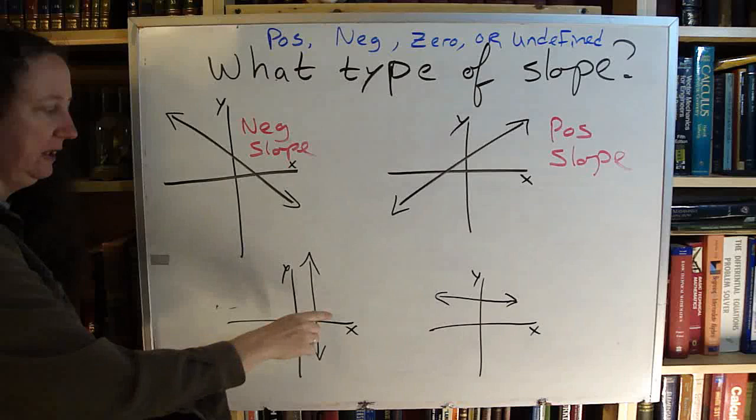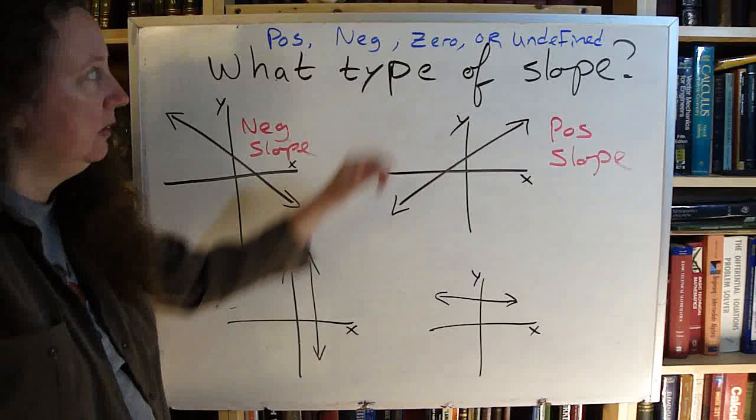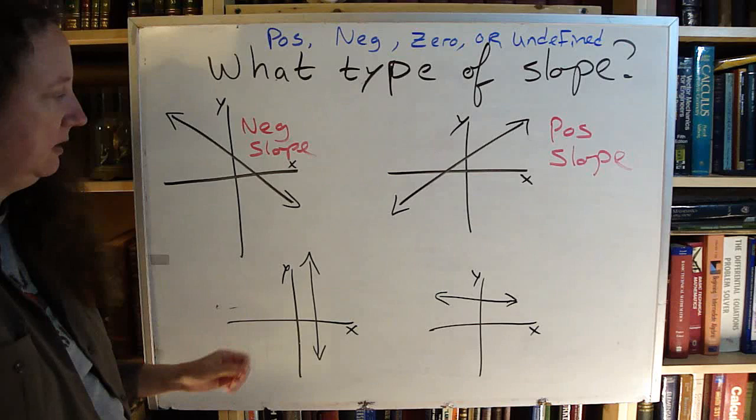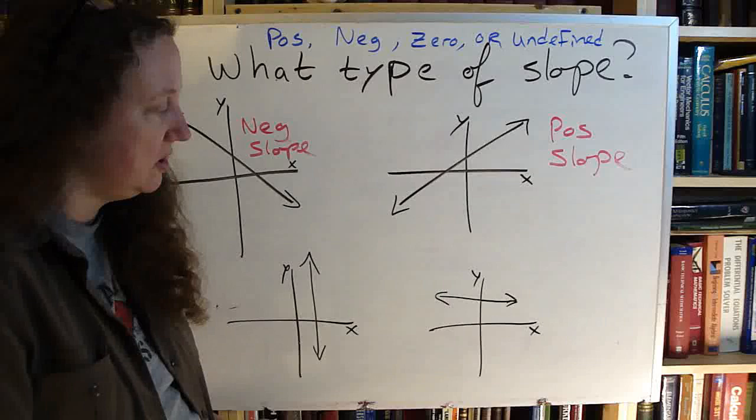Looking at these two, by elimination, you know that it's neither negative nor positive. So now we're down to either zero or undefined. We're going to look at this one - kind of hard to tell. We're going to look at that one, easier to tell. Let's look at this one first so we can eliminate the other option.